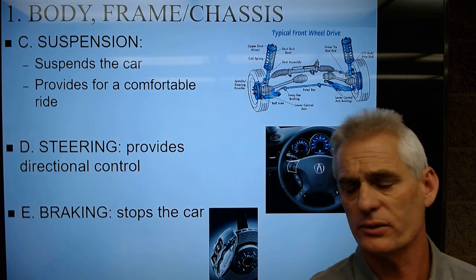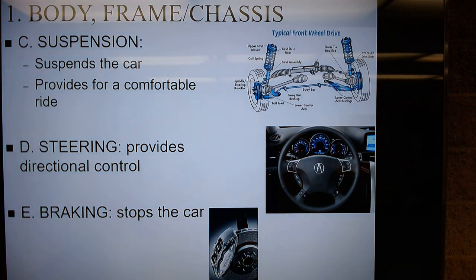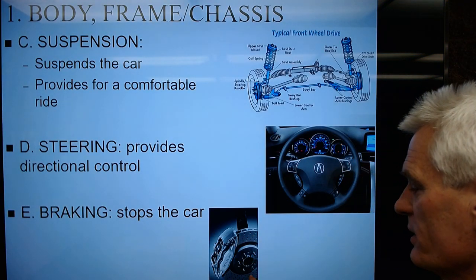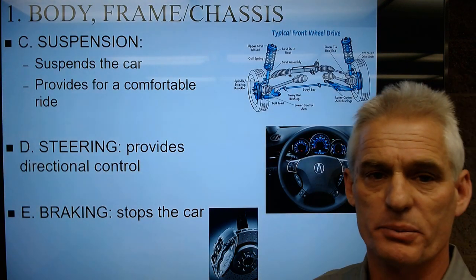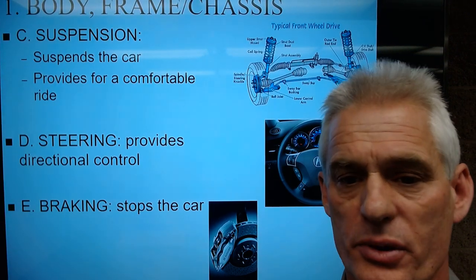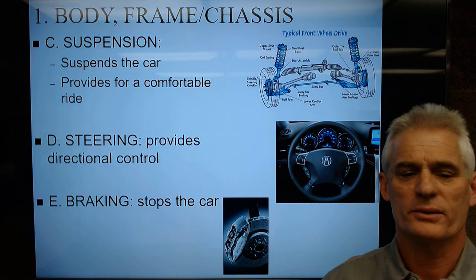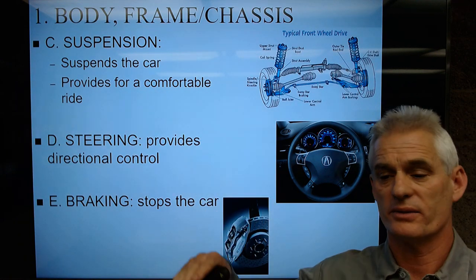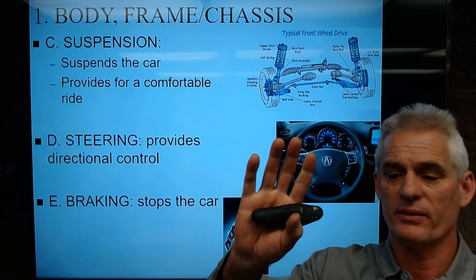The fifth subset is our brakes. The braking system is used to stop the car. That's an aftermarket front disc brake setup — I can tell it's high-performance because of all the holes drilled in the rotor, which cool it. So we have the body, the frame, the suspension to hold it up off the ground, the steering for directional control, and the brakes to stop the car.